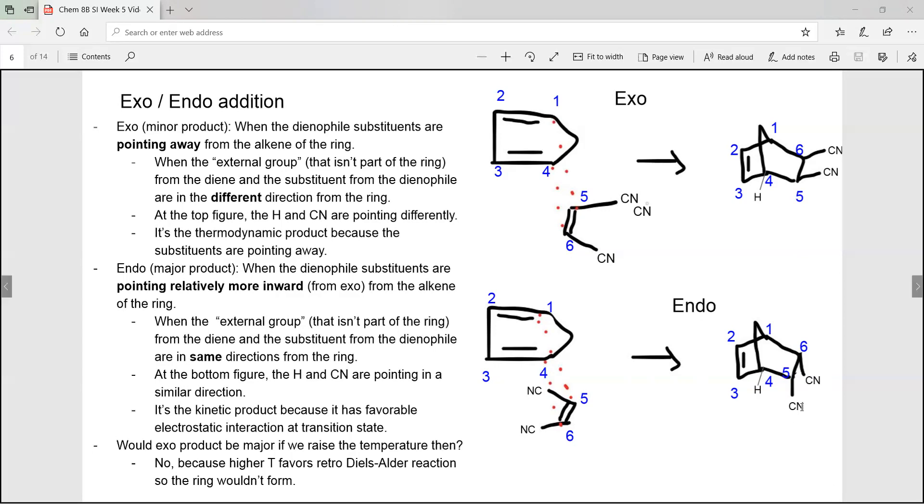So here, the hydrogen and the cyanide are pointing the same way. This is the kinetic product because it has a lower energy in transition state due to a favorable electrostatic interaction. The endo product here is the major product because it has a lower energy transition state.